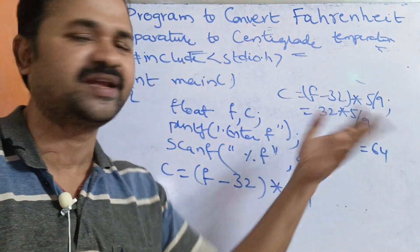C equals F minus 32 into 5 by 9. We evaluate the expression, then the result is displayed. Printf: centigrade temperature is equal to.